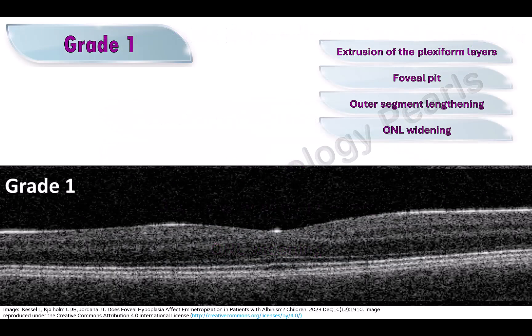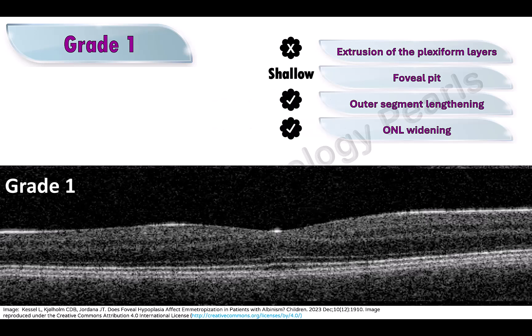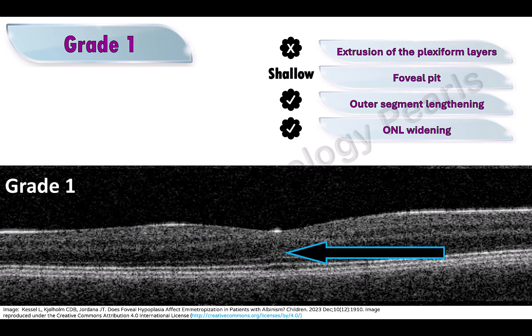In grade 1 foveal hypoplasia, complete extrusion of the plexiform layers is absent — you can still see them posterior to the foveola. This feature is present in all grades and the foveal pit is shallow. The outer segment lengthening and outer nuclear layer widening are present as normal. Here is the outer segment lengthening and here is the outer nuclear layer widening.